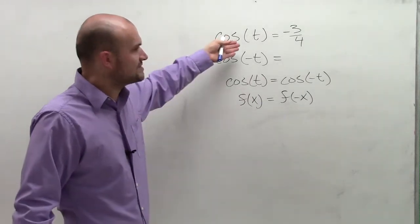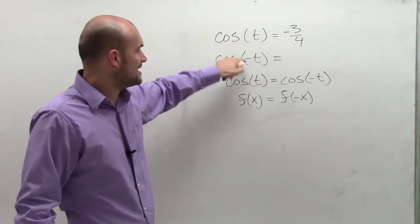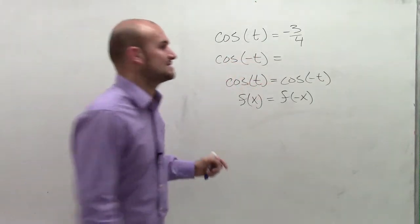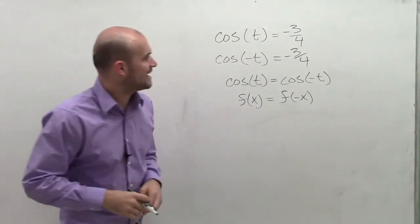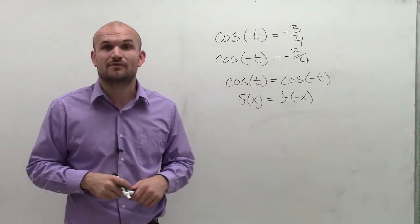So therefore, no matter what cosine of t is, the cosine of negative t, if I'm going to evaluate that, I'm still going to get the exact same value out. So therefore, my value is cosine of negative t is going to be equivalent to negative 3 fourths.